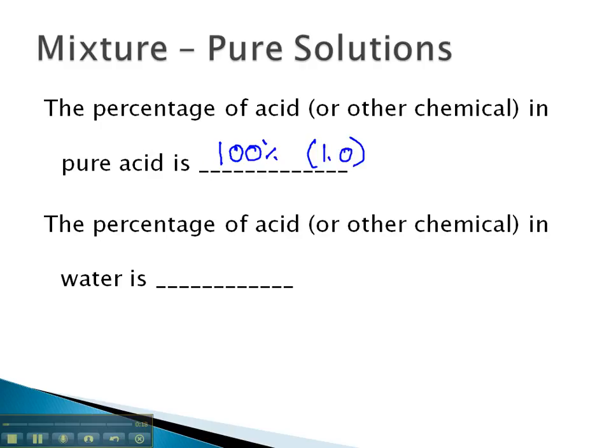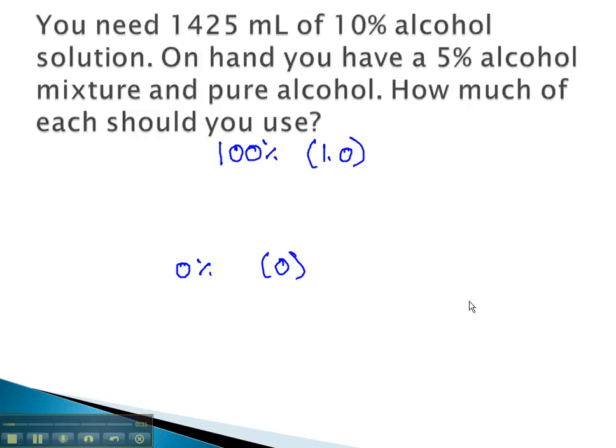If we're talking about water, the percentage of acid or other chemical in the water will always be 0%, or as a decimal, just 0. Let's take a look at some problems where we have to use either pure acid or some other chemical, or pure water.